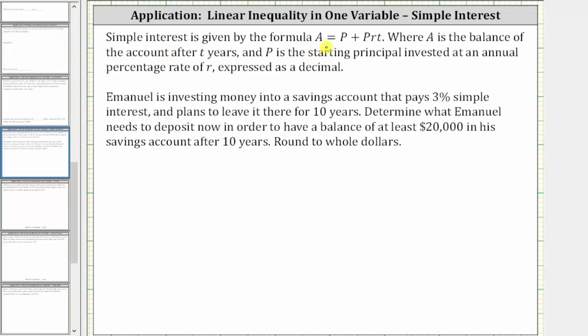Simple interest is given by the formula A equals P plus P times R times T, where A is the balance of the account after T years, and P is the starting principal or starting amount invested at an annual percentage rate of R, expressed as a decimal.